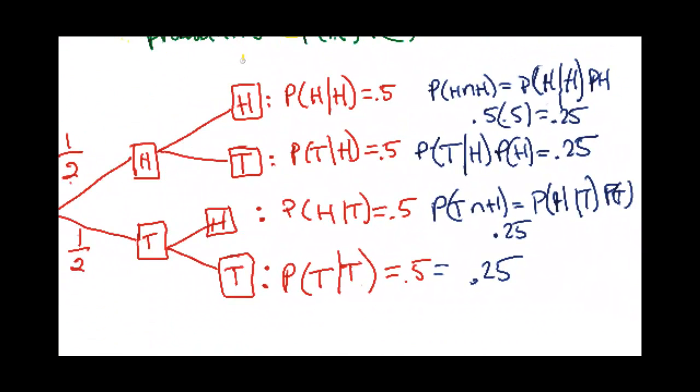Basically the second line of a factor tree is always a conditional probability. And if you want the intersection of this one and this one, for instance, you have to take the conditional probability times the condition probability.